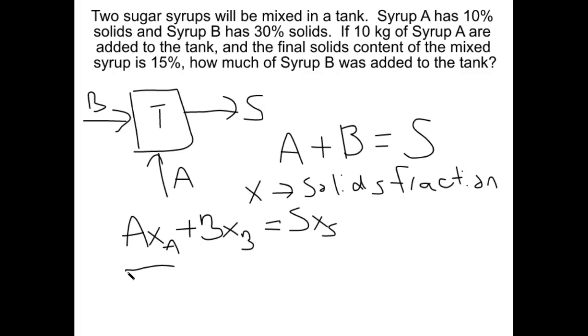So let's double check this for the number of unknowns we have. Now we know what A is, it's 10 kilograms right there. We know what our solids content of A is, and we know what our solids content of B is. Let's check and see what we have. We have A, we don't know B, we don't know S. Let's go to our solids balance because we've got too many unknowns to solve that total.